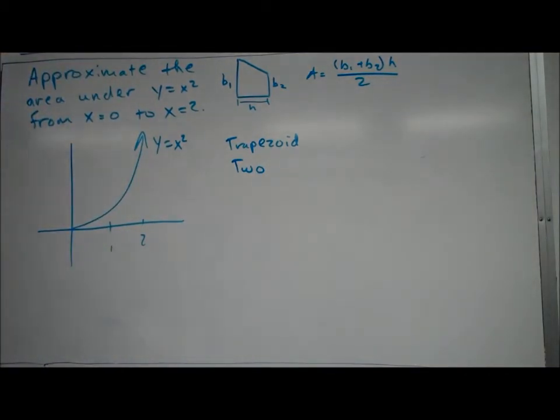So to make our trapezoids, essentially what we're going to do is at each endpoint, so our first trapezoid will go from zero to one, so we have two trapezoids on an interval of two. So you just make a little point at each endpoint, so at zero and at one, and you essentially just connect those two lines together.